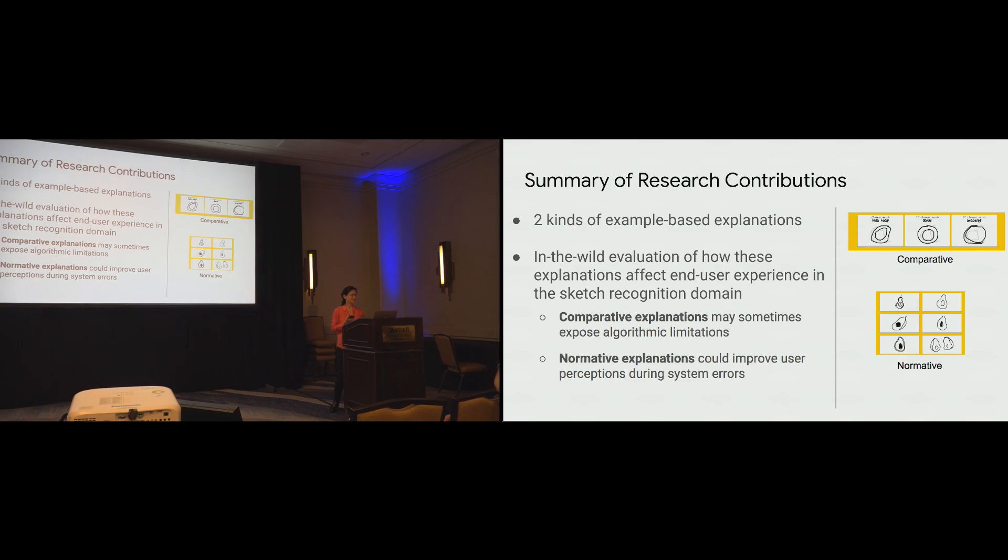So, to summarize the research contributions, we explored two kinds of example-based explanations. And we also conducted an in-the-wild evaluation, where we found that these example-based explanations do have some effect on end-user experience, but that these effects differ depending on the type of explanation. So, comparative explanations, on the one hand, sometimes led to surprise and may have exposed some of the algorithm's limitations. Whereas, normative explanations tended to improve user perceptions during system errors. So, depending on your goal, you may want to consider these different kinds of explanations differently.